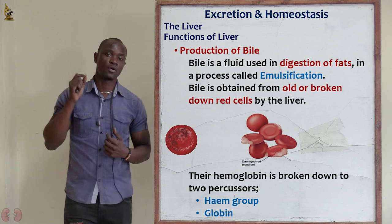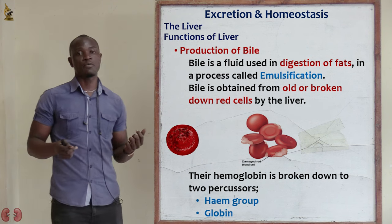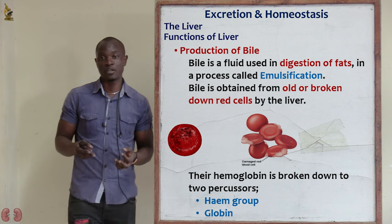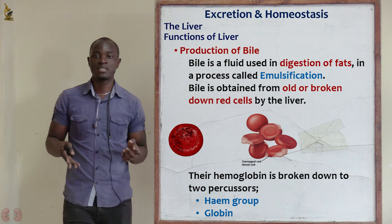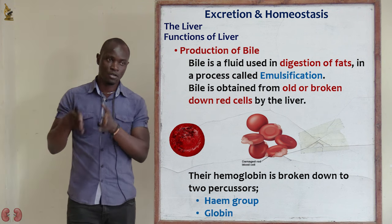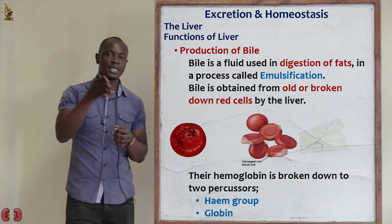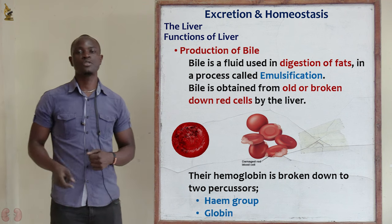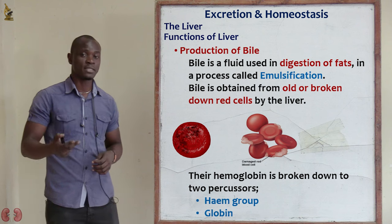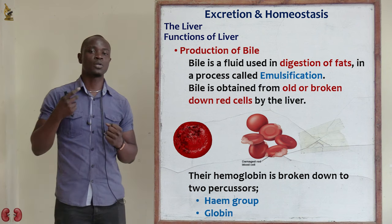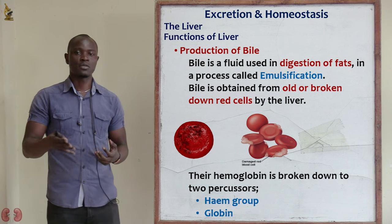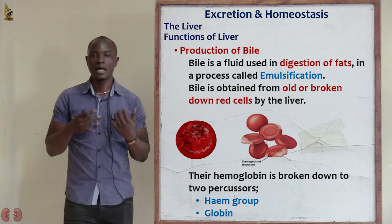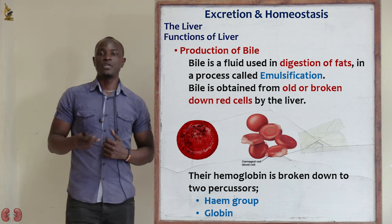Another function of the liver is the production of bile juice. Bile juice is essential in the process of digestion, and its main function is emulsification — the process of breaking down large fat droplets into small oil droplets. Apart from emulsification, bile juice also contains sodium taurocholate and sodium glycocholate, whose function is to neutralize the acidic chyme coming from the stomach.